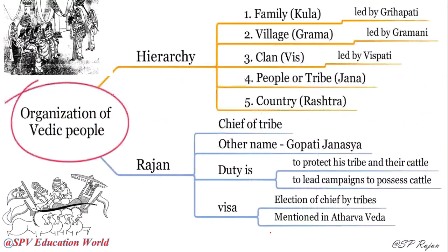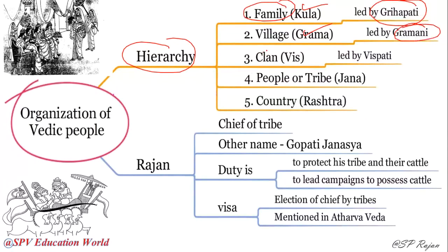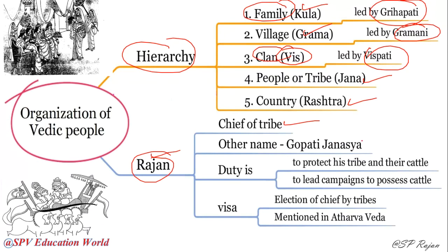Vedic people were organized in hierarchical order: Family (Kula) was headed by the Grihapati — the oldest male. Village (Grama) was led by the Gramani. Clan or tribal group (Vis) was led by Vispati. The people of the tribe were called Jana. Country was called Rashtra. The ruler was called Rajan — also known as Gopati Janasya — whose duty was to protect the tribe and take care of cattle.